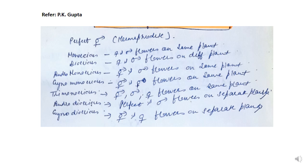Dioecious plants are those plants where the male and female flowers are present on different plants. Andromonoecious plants are those where hermaphrodite flowers having both gynoecium and androecium, as well as male flowers, are on the same plant. Gynomonoecious plants are those where hermaphrodite flowers and female flowers are present on the same plant. Trimonoecious plants are those where hermaphrodite, male, and female flowers are present on the same plant.